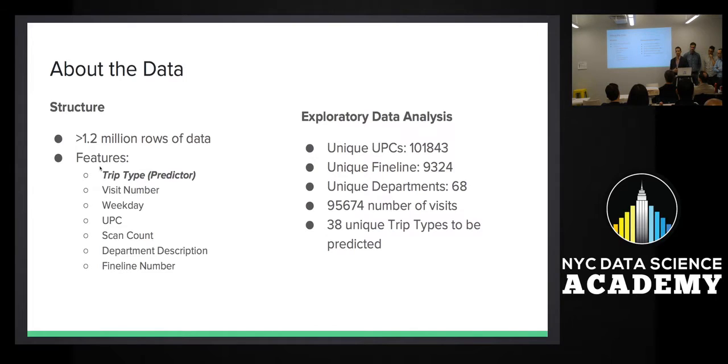The number of items that were purchased or returned given that UPC, a general department description with 68 unique department descriptions, and then a fine line number which gave a little bit more granularity into what type of item it was. This information though was categorical numeric IDs, so just looking at the data we didn't really know what it meant. It was more about finding patterns and trying to come up with the classification.